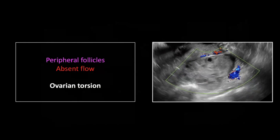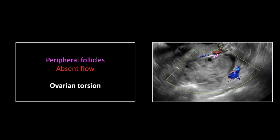This is a torsion — there's no flow in the ovary, and that's the main thing to go by. An additional finding is peripheralization of follicles: when an ovary torses, it gets edematous in its stromal center first, and that edema pushes the follicles out to a more peripheral location in the cortex of the ovary. You can see the edematous stroma and absent flow here.